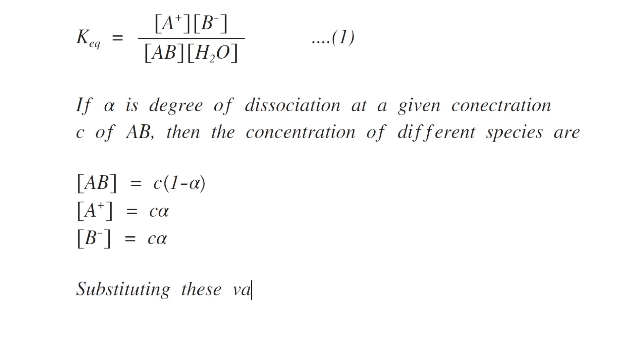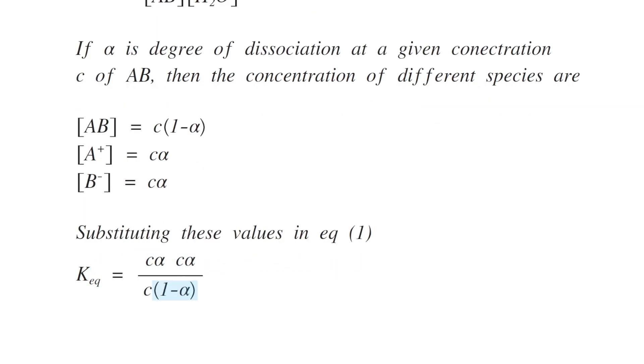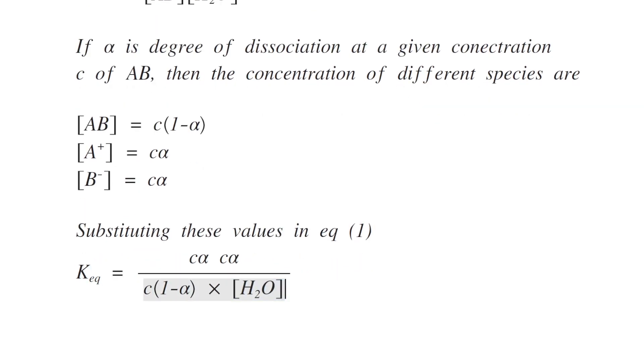Substituting these values in equation 1, we can get K equilibrium equals C alpha into C alpha divided by 1 minus C alpha into H2O.